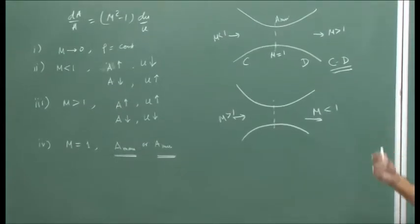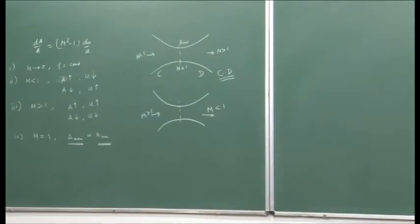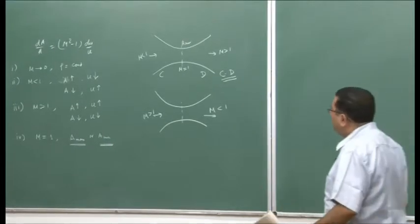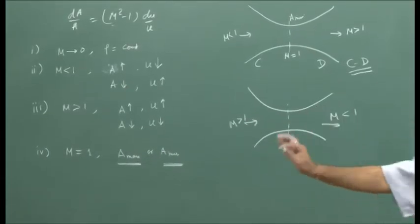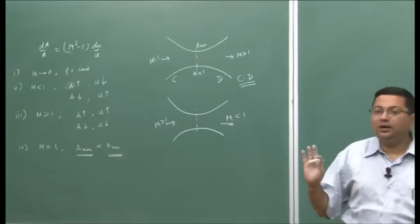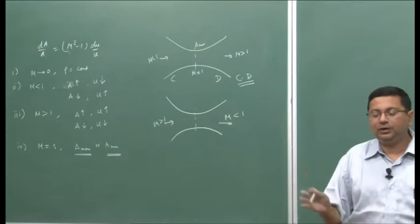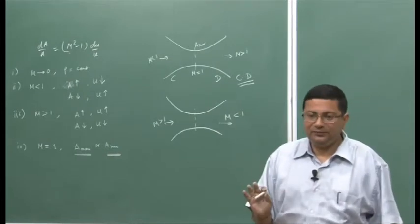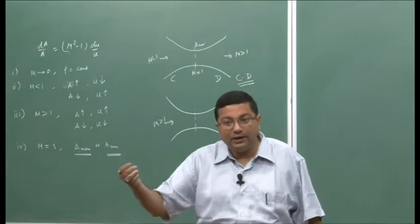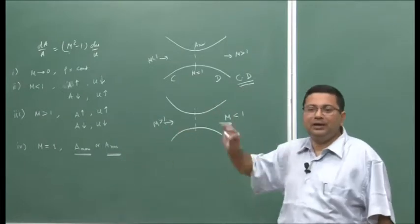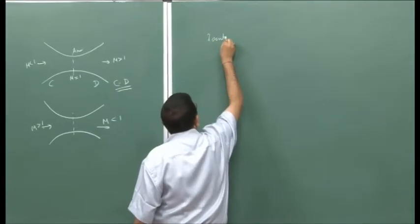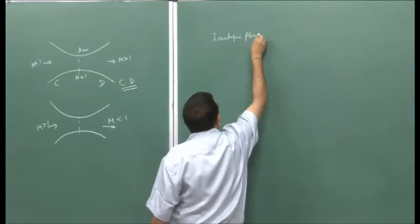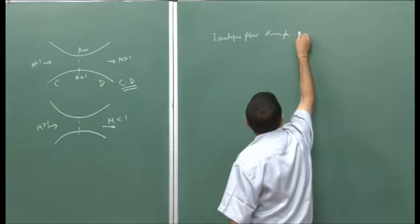Let us now proceed from there. I would like to get the actual relationship so that we can get the velocity. In the derivation, where we got the Mach number, we have assumed that the flow is adiabatic and frictionless, therefore isentropic. So now let us take it further and look at the isentropic flow through the variable area ducts. The next topic is isentropic flow through variable area ducts.